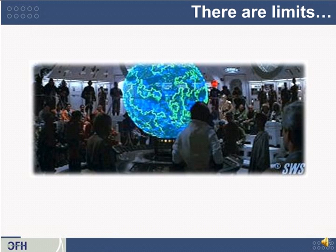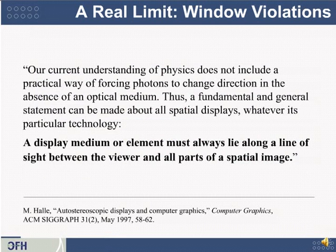For example, the people in a scene can't really look through that image unless there's some sort of display element where that picture of that planet is. The best explanation I've found for what's called a window violation was written by Mike Halley, who is an excellent researcher of 3D displays. What he said was really important, so I'll just read it out loud: our current understanding of physics does not include a practical way of forcing photons to change direction in the absence of an optical medium.